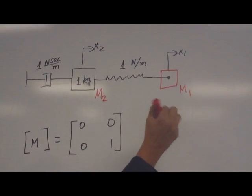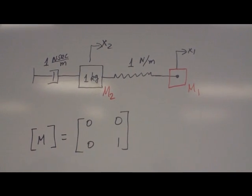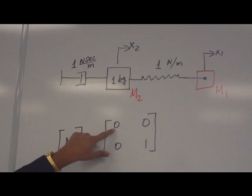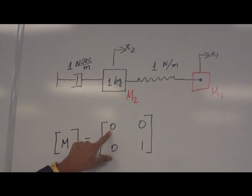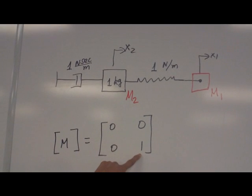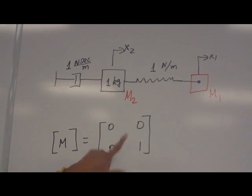So if you take the mass M1, the value of that is 0 because it is a 0 mass, virtual mass. And mass 2, 1 kilogram. Its diagonals, so off diagonals are 0.